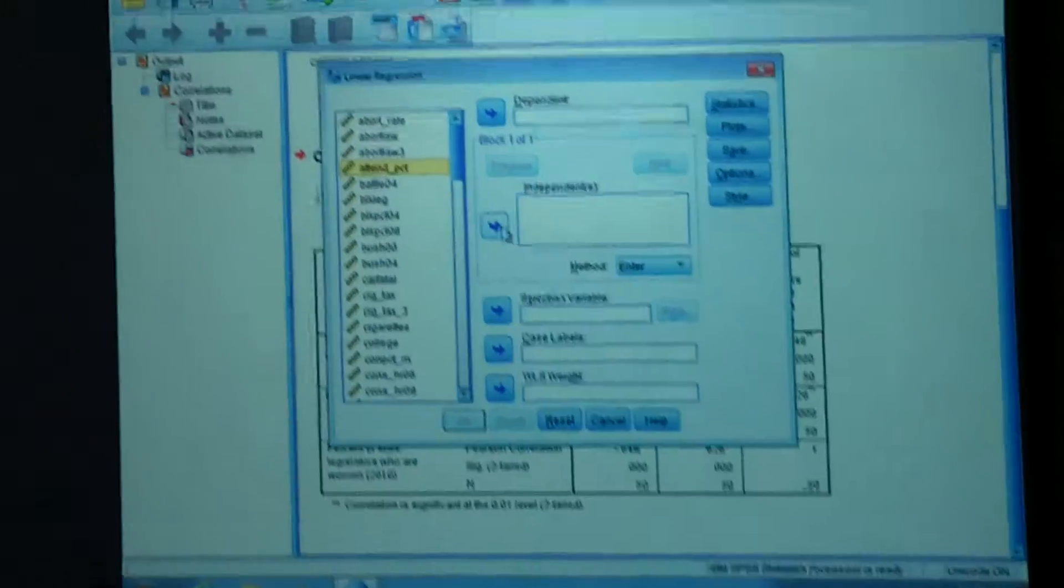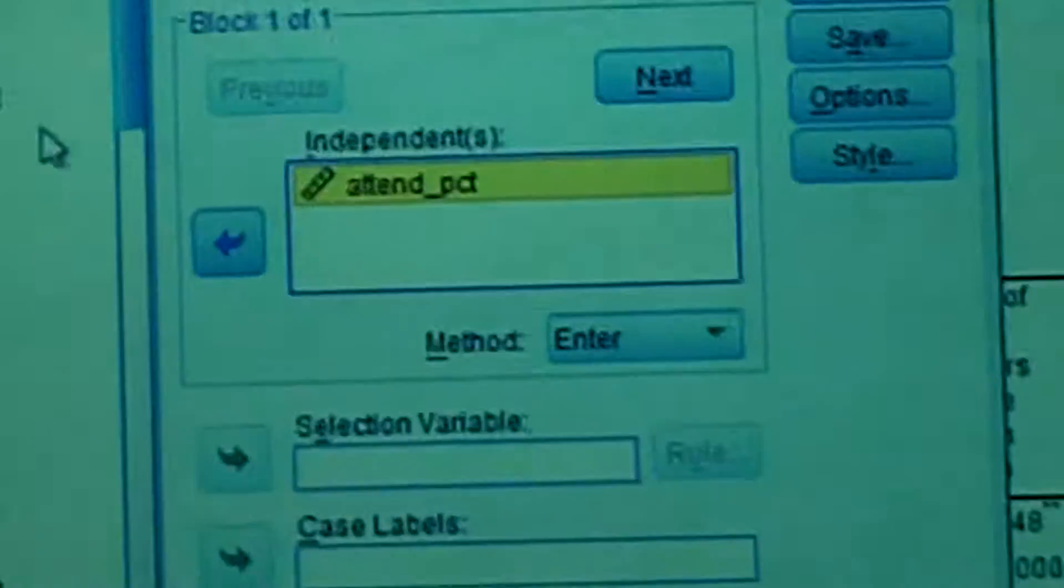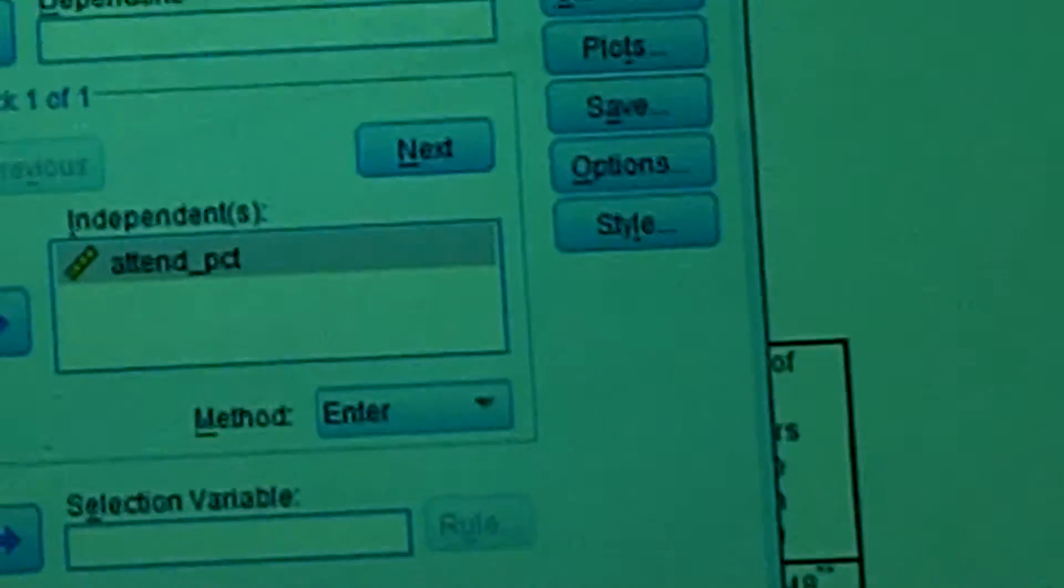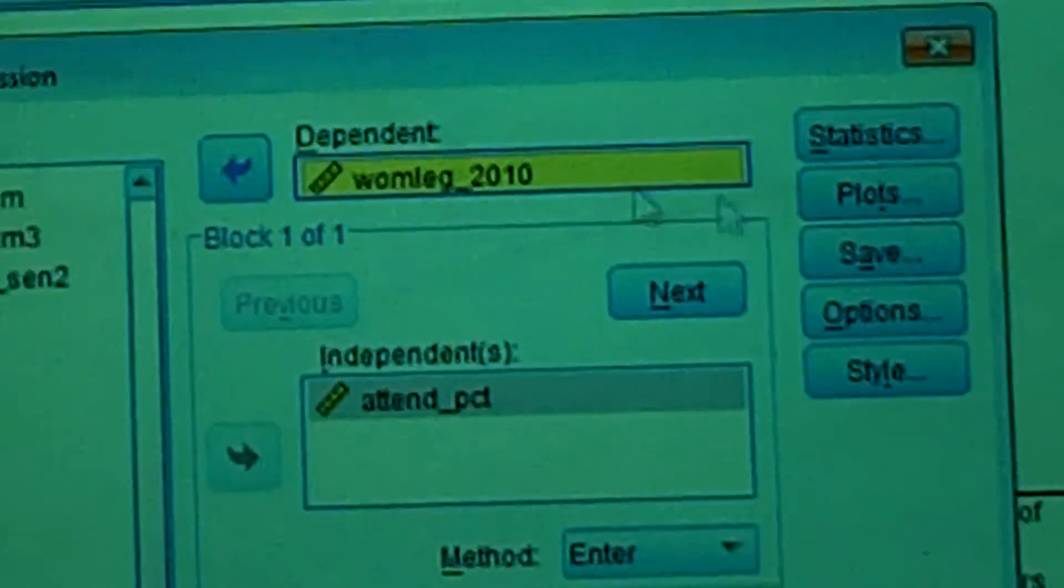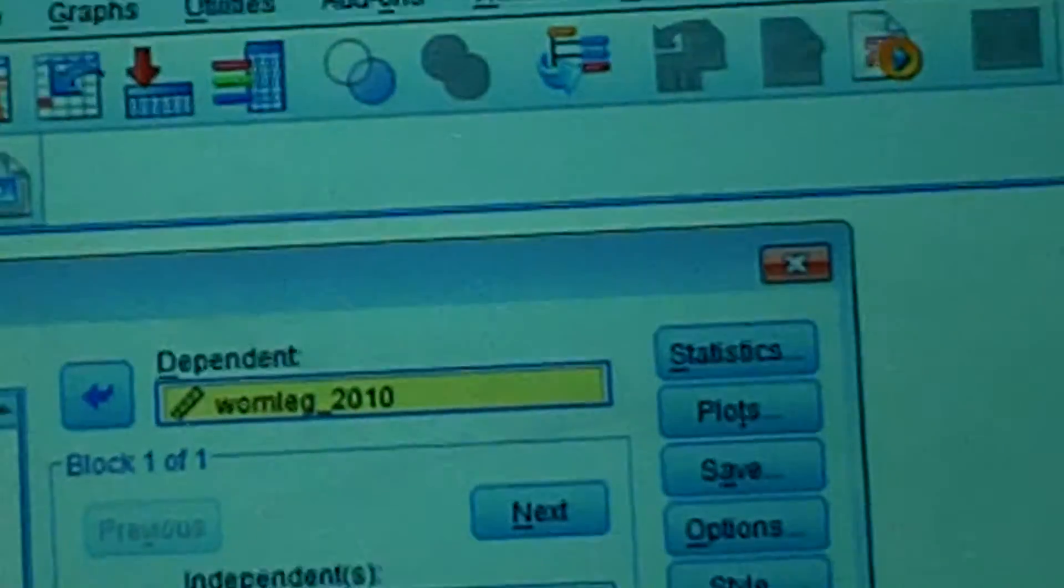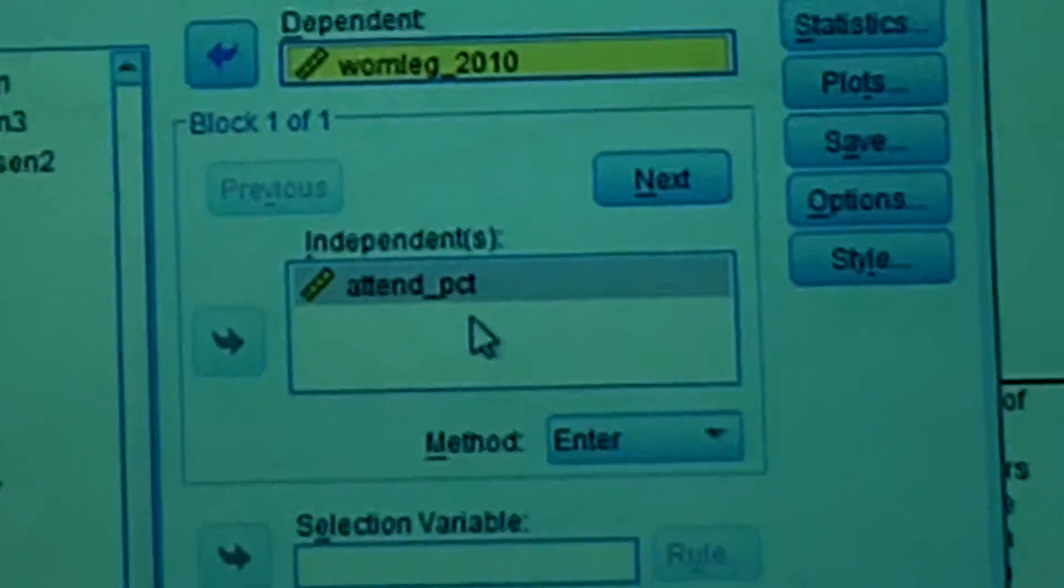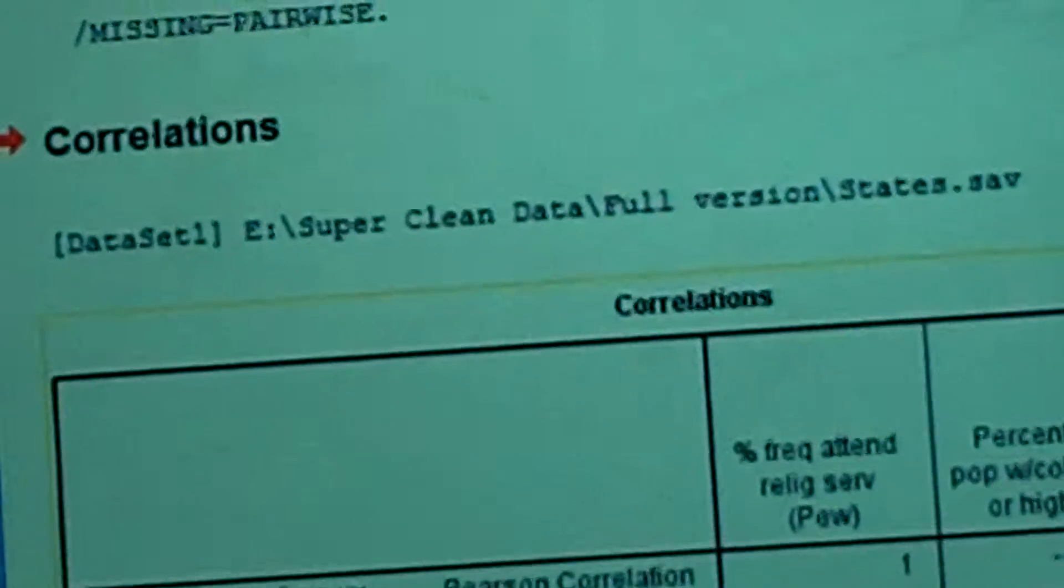We want to use the variable a10-3, a10 percentage rather. That's our independent variable. We want to use that to explain variation in the 50 states in terms of how many women legislators. Alright, so this should be a negative relationship. And we go ahead and do it.